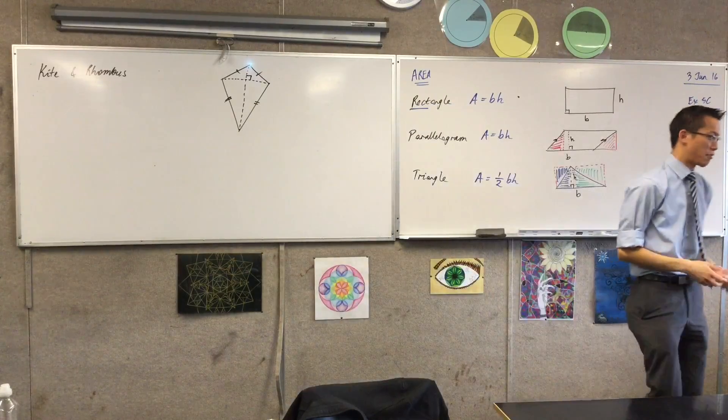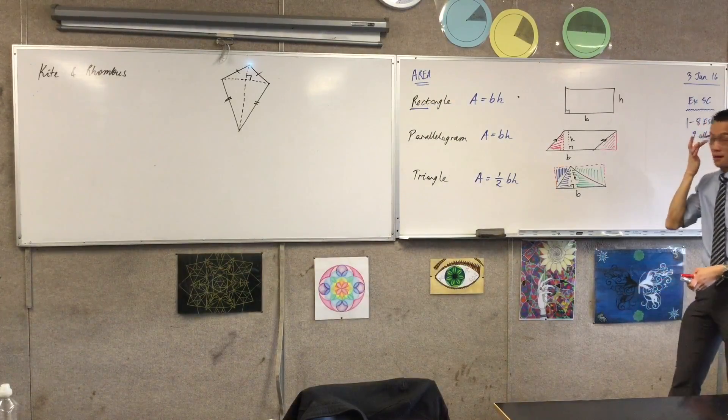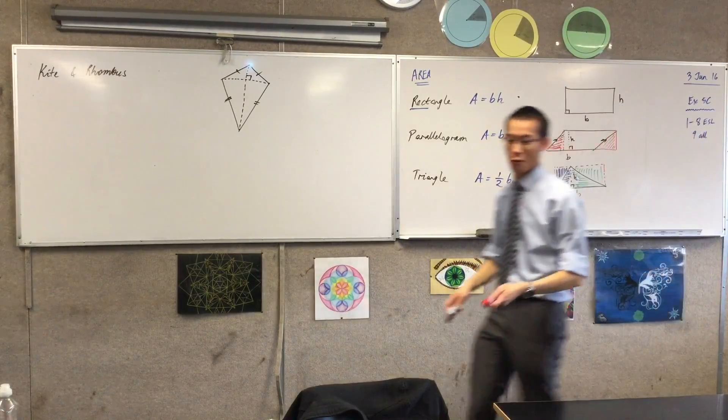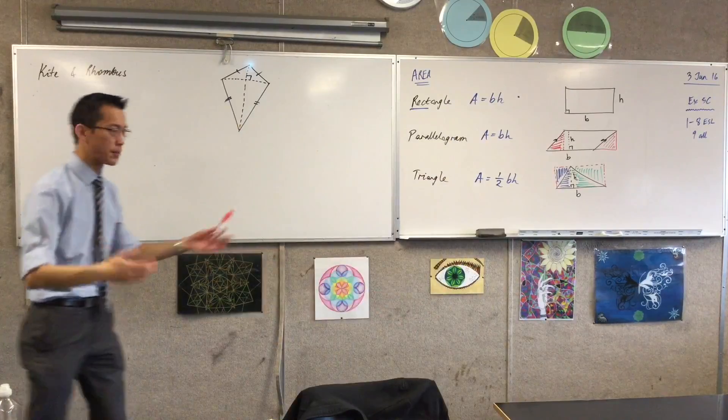Well, watch what happens when I draw my box, when I draw my rectangle around my kite, well, my rhombus. Use a ruler, so you can see we're going to get something like this.